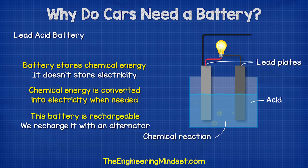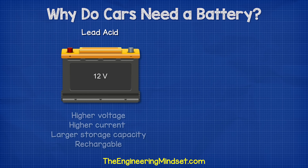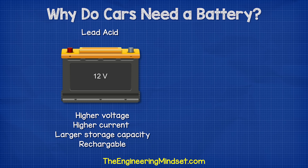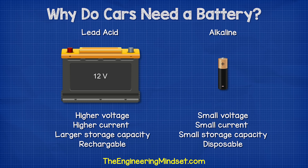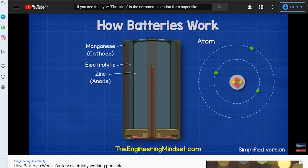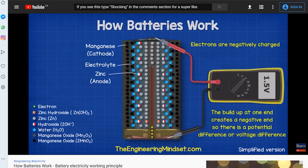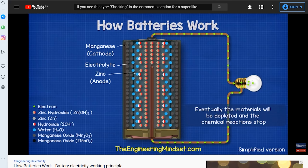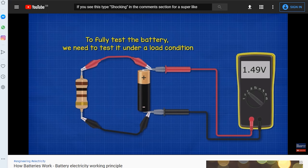This battery is also rechargeable. If we supply the battery with electricity, then we can reverse the chemical reaction and recharge the battery. These types of battery provide large amounts of current, especially compared to the typical, smaller, household alkaline batteries. We have covered how alkaline batteries work in our previous video — do check that out. Links can be found in the video description down below.